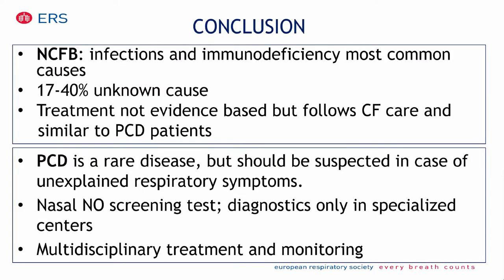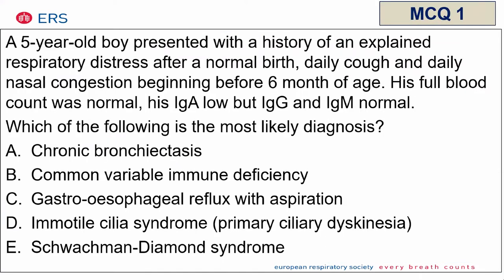In conclusion: for non-CF bronchiectasis, infection and immunodeficiency are the most common causes, and 17 to 40 percent have an unknown cause. Treatment is not evidence-based but what we know comes from CF, and the treatment of CF bronchiectasis is very similar to PCD. PCD is a rare disease but should be suspected in cases of unexplained respiratory symptoms. Nasal nitric oxide screening should be performed only in diagnostic specialized centers. Treatment should be multidisciplinary.